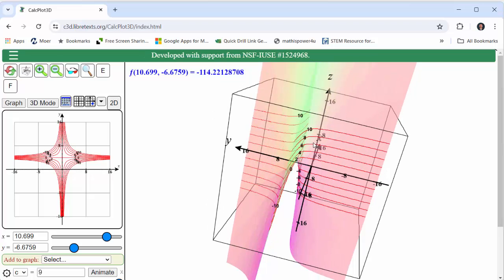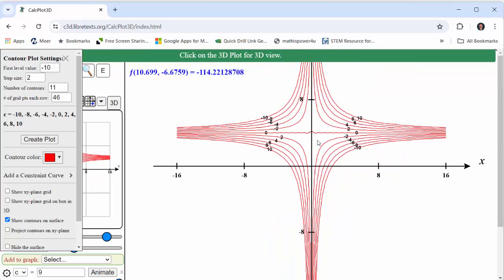Now let's take a look at a possible contour map for the given function. A contour map is simply a set of level curves for the function, which we see here.